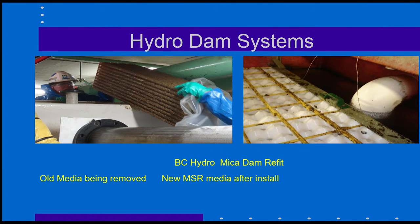We also do retrofits of existing systems. In the left picture here, you can see the workmen taking the old media out of an existing fiberglass tank at Mica Dam, which belongs to British Columbia Hydro. They replaced it with our media, which you can see in the photo on the right, and got much more flow capacity — almost twice as much — and higher quality effluent too.